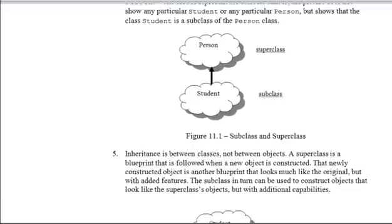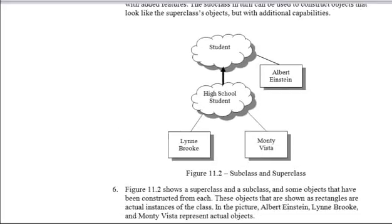This is just a nice picture representation. The clouds in this particular document represent classes, and then in boxes there are specific instances of those classes — objects. So Albert Einstein is a student object. Monte Vista is a high school student object. But a high school student object is also a student object. So you could say that Monte Vista is both a high school student and a student.